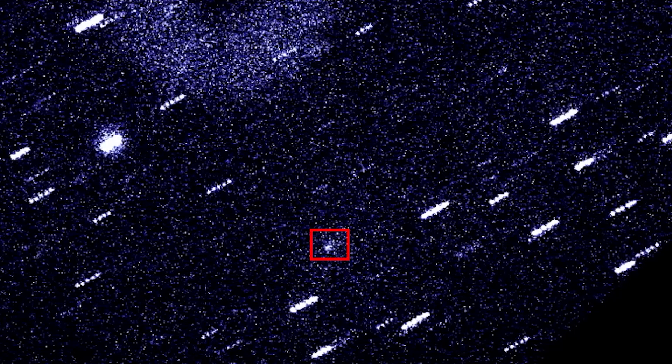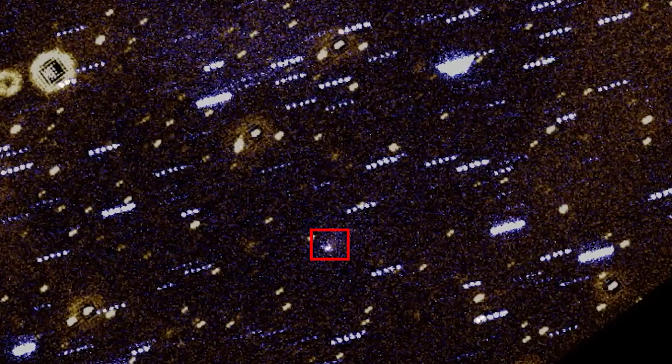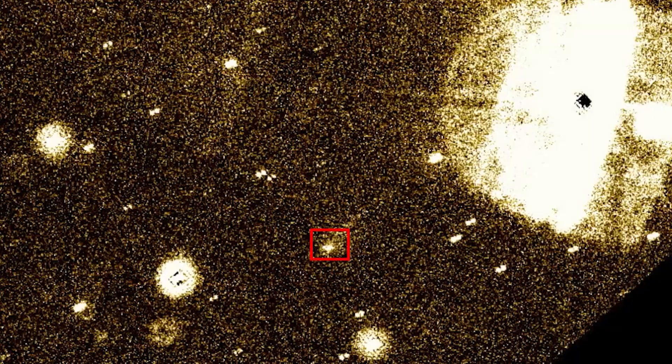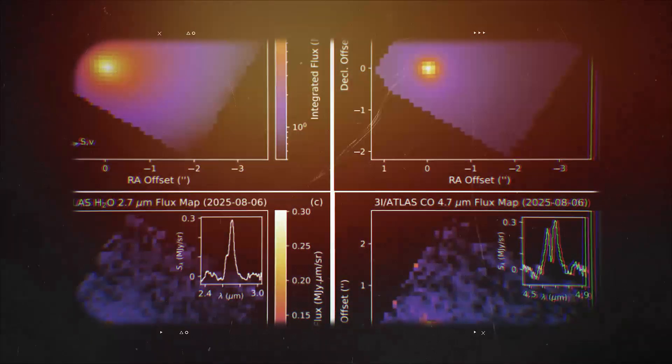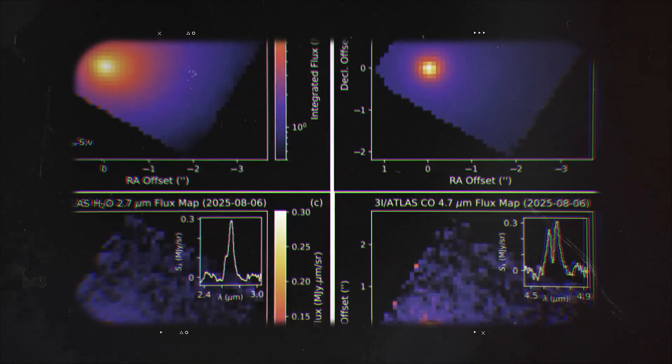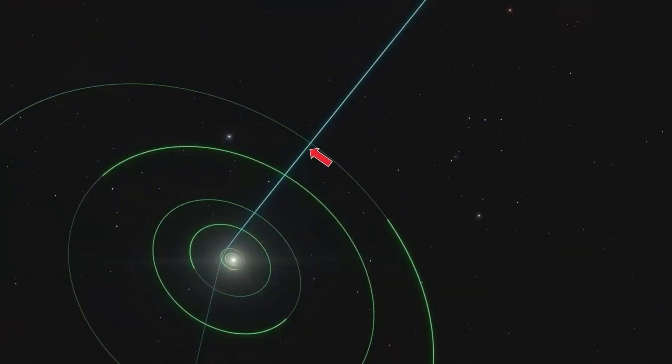And you can see this everywhere in the data, the unusual orbit, the strange molecular output, it all points to an object with a violent and unique history. It's not just a comet, it's a piece of cosmic shrapnel from a battle that happened before Earth even had oceans. But what could have shattered an object that large and powerful?